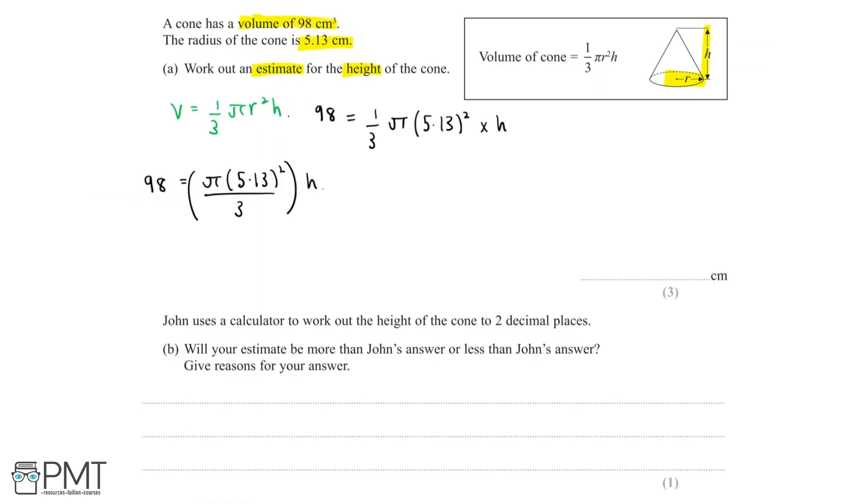Now, to get height on its own, we need to divide both sides by π (5.13)² over 3. So we can do that over here. We'll say 98 divided by π (5.13)² over 3 is equal to the height.